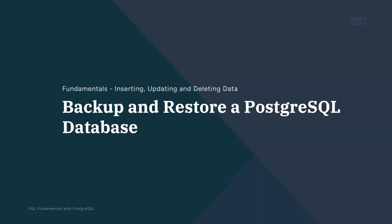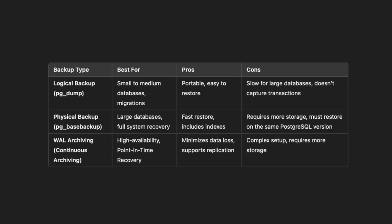In this tutorial we're going to learn how to backup and restore a PostgreSQL database. There are three types of backups you might want to create when working with a Postgres database. The first, and what we're going to perform in this tutorial, is a logical backup. A logical backup creates a copy of the database in a human-readable SQL format — it extracts table schemas, indexes, anything we select, and stores them in a file that can be restored later.